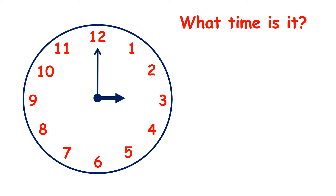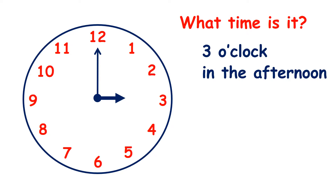What time does the clock show now? The hour hand is at 3 and the minute hand is at 12, so it's 3 o'clock. If it's after lunch in the daytime, we can say it's three o'clock in the afternoon, or we can say it's 3 p.m.